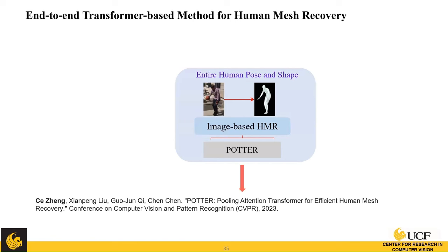Next, I'm going to cover Poder, which is still image-based HMR — an end-to-end transformer-based method for human mesh recovery. This paper is published in CVPR 2023.